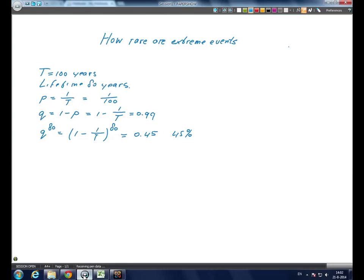The probability that the person in their lifetime of 80 years experiences the extreme event once or more is P equals 1 minus (1 minus 1 over T) to the power 80 equals 55%.